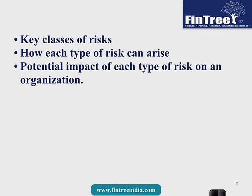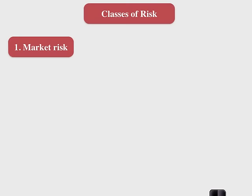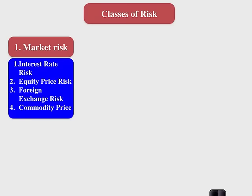Classes of risk. First is market risk, which has four sub-parts: interest rate, equity price, foreign exchange, and commodity price. Interest rate risk: if interest rates increase, the valuation of your assets decreases; if you have a floating rate loan, risk is the increase in interest rates. Equity price risk is a decrease in asset value. Foreign exchange risk arises if you have an asset and the currency depreciates, or a liability and the currency appreciates.